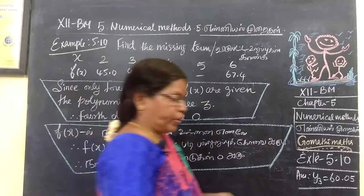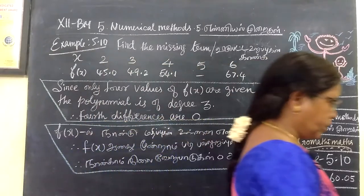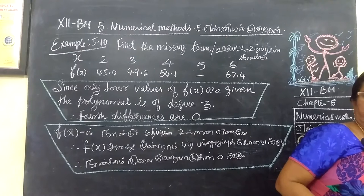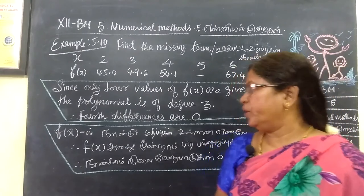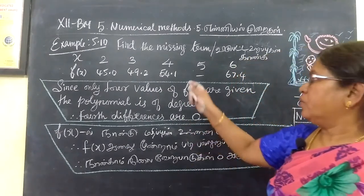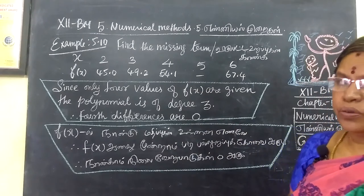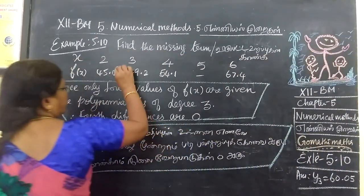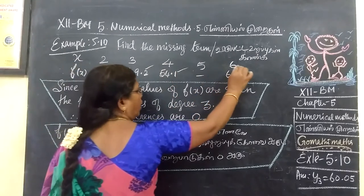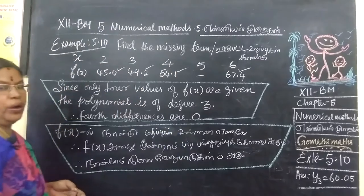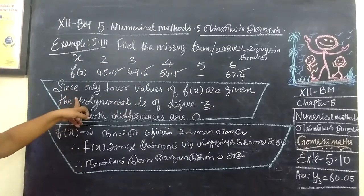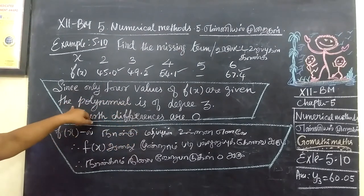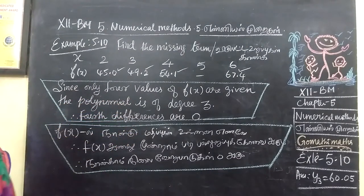Next is Chapter 5, 12th Business Mathematics. This is example 6.5.10. You are given X₀ values and F(X₀) values — 4 values of F(X) are given. Therefore, the polynomial is of degree 3.